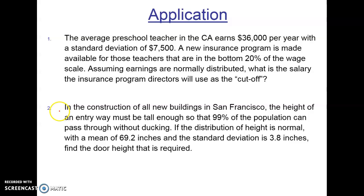Let's move on to the next one. For this one, it says, in the construction of all new buildings in San Francisco, the height of an entry must be tall enough so that 99% of the population can pass through without ducking. If the distribution of height is normal with a mean of 69.2 inches and a standard deviation of 3.8 inches, find the door height that is required.